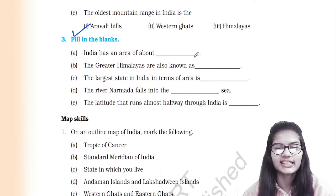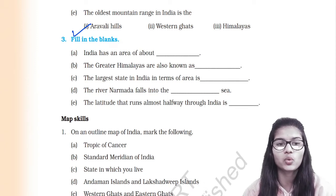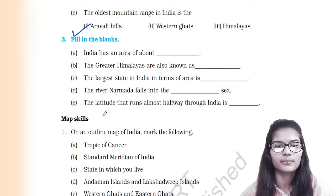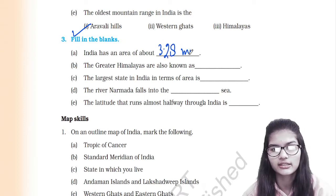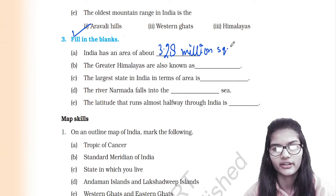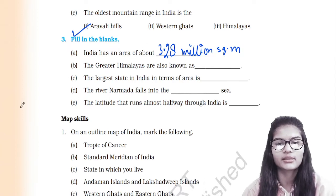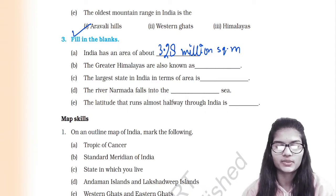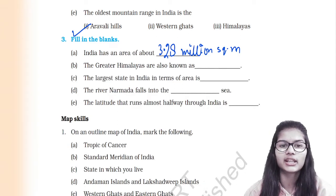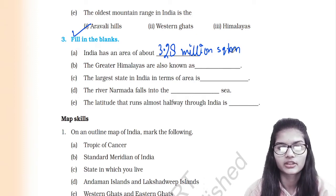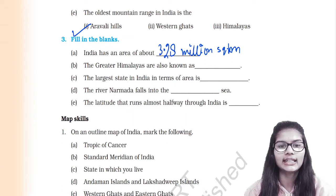Now we will solve the fill in the blanks. India has an area of about 3.28 million square kilometres. Since no specific direction — north to south or east to west — is mentioned, we mention the complete area: 3.28 million square kilometres.